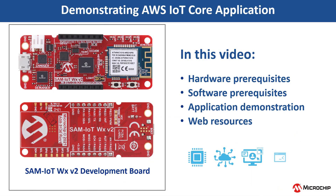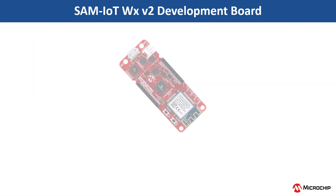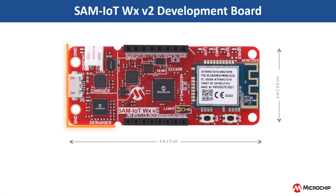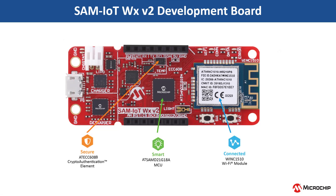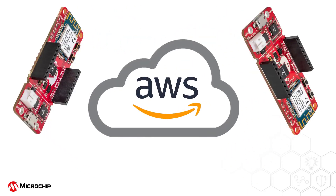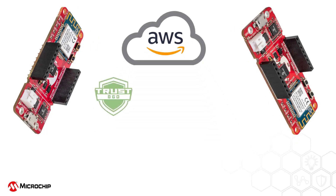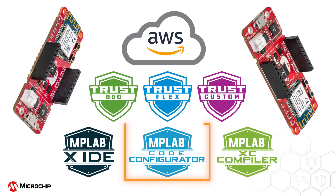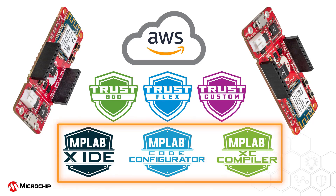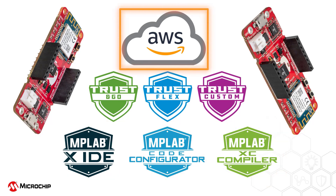In this video, we will show you how to get started with an AWS IoT Core application using the SAM IoT WX V2 Development Board. Microchip offers this board as part of their secure, connected, and smart world initiative to simplify IoT design. The SAM IoT Board connects to AWS Cloud IoT Core in 30 seconds, using the Trust Platform Design Suite, MPLAB Code Configurator, and MPLAB Tools Ecosystem — allowing you to add AWS connectivity to new and existing projects with just a few clicks.